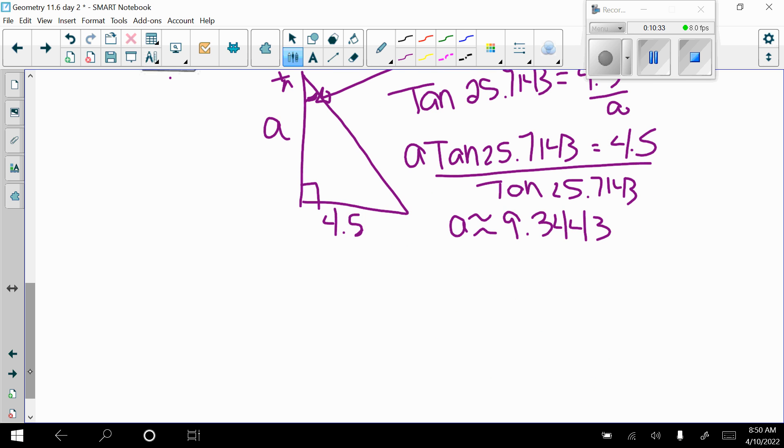So now I can say that my area is equal to 1 half the apothem we just found, 9.3443, times our perimeter, which was 63, times 63, cut in half. So our area is approximately 294.3 square centimeters.